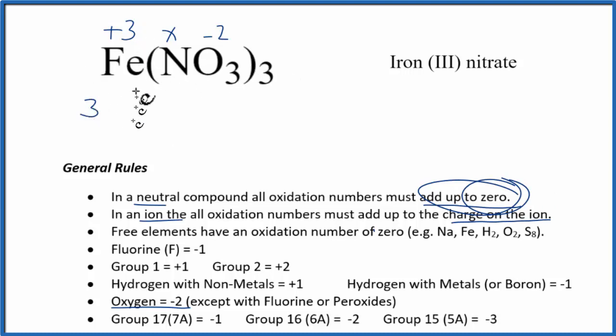We have three for the iron, plus three, plus, let's just put parentheses in here, X, we don't know that, plus three oxygens, and each one is minus two. So minus two, and then the whole thing, everything here in parentheses, that's going to be three.